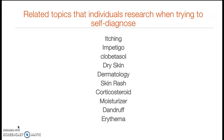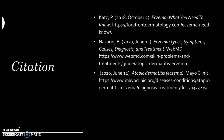Sometimes people search Google to self-diagnose themselves. Common search terms include itching, impetigo, dry skin, dermatology, skin rash, corticosteroids, moisturizer, dandruff, and erythema — those are just some things people put into Google search for self-diagnosis.